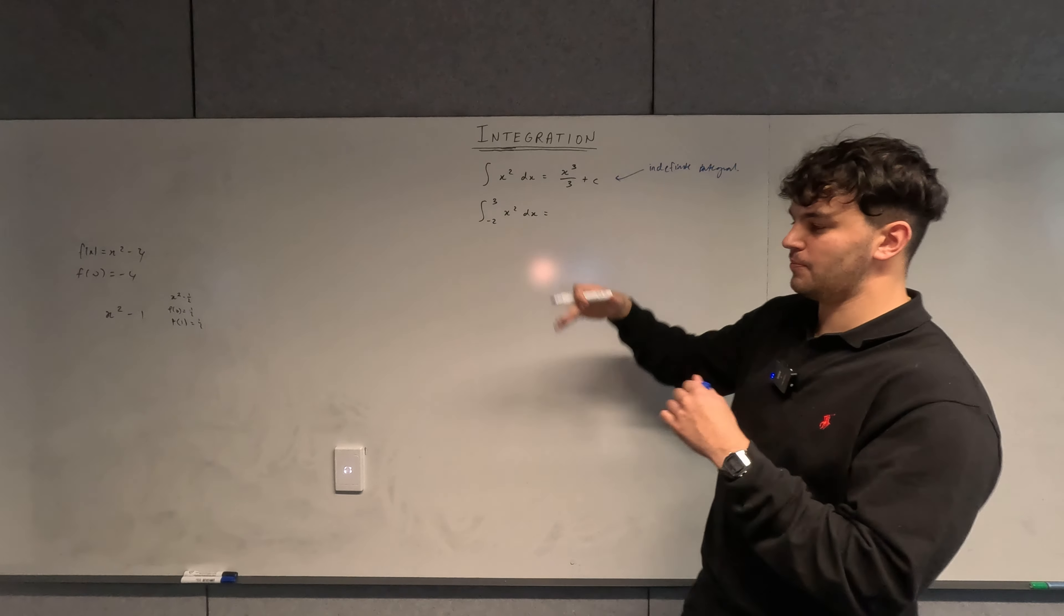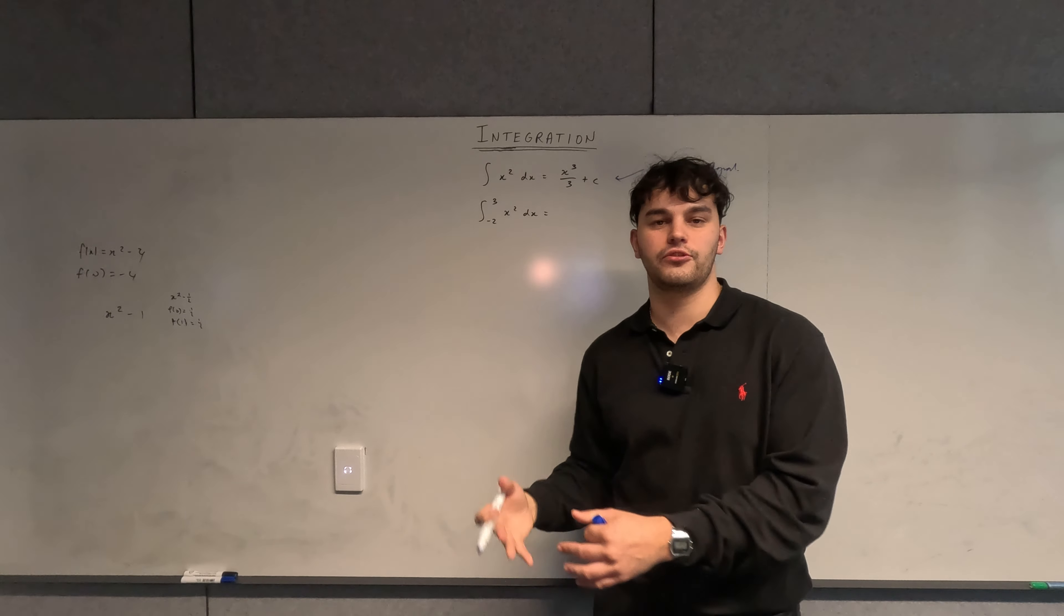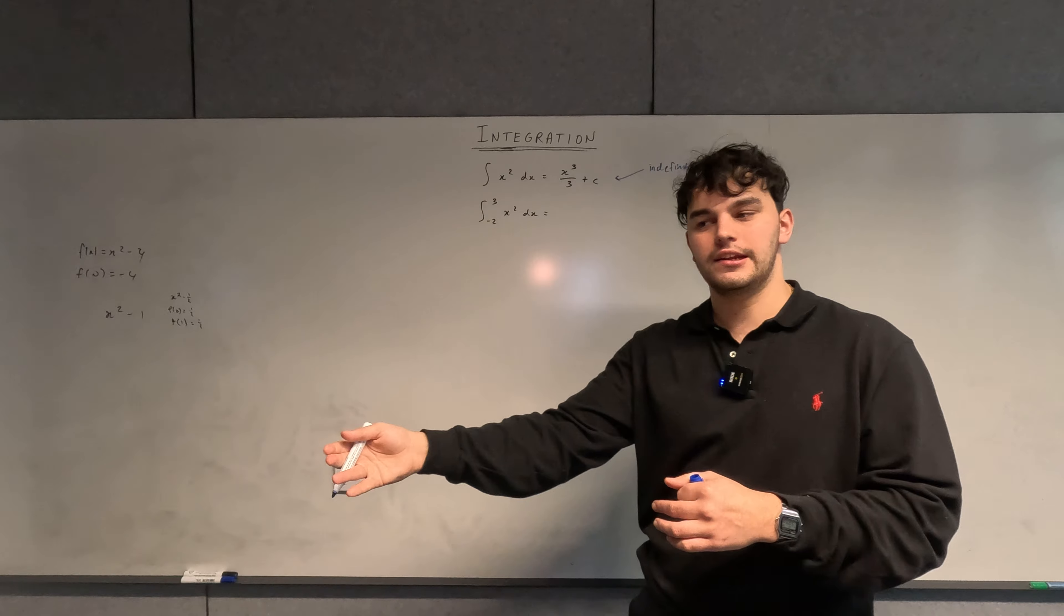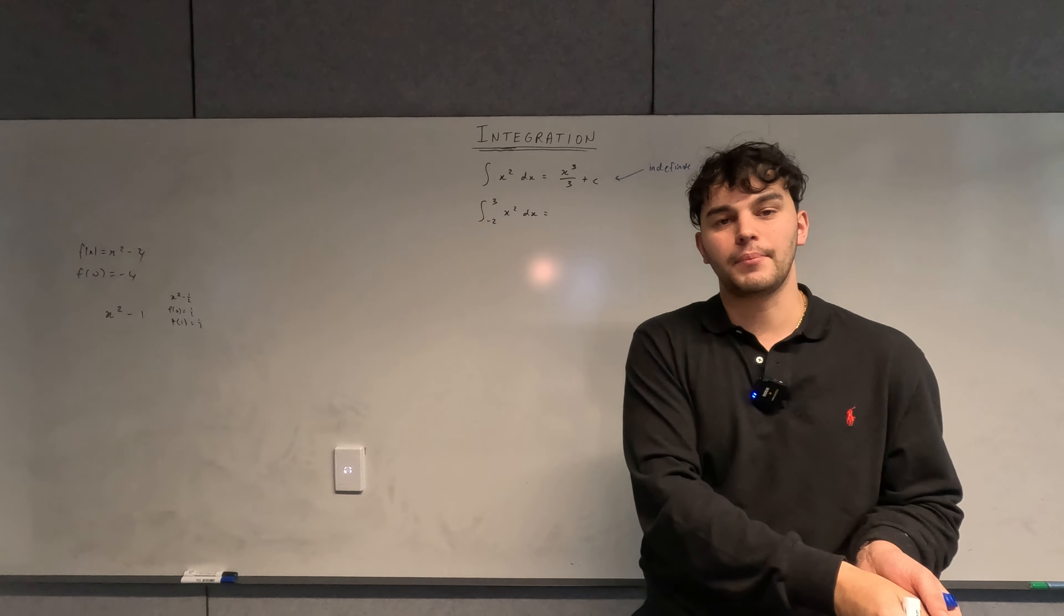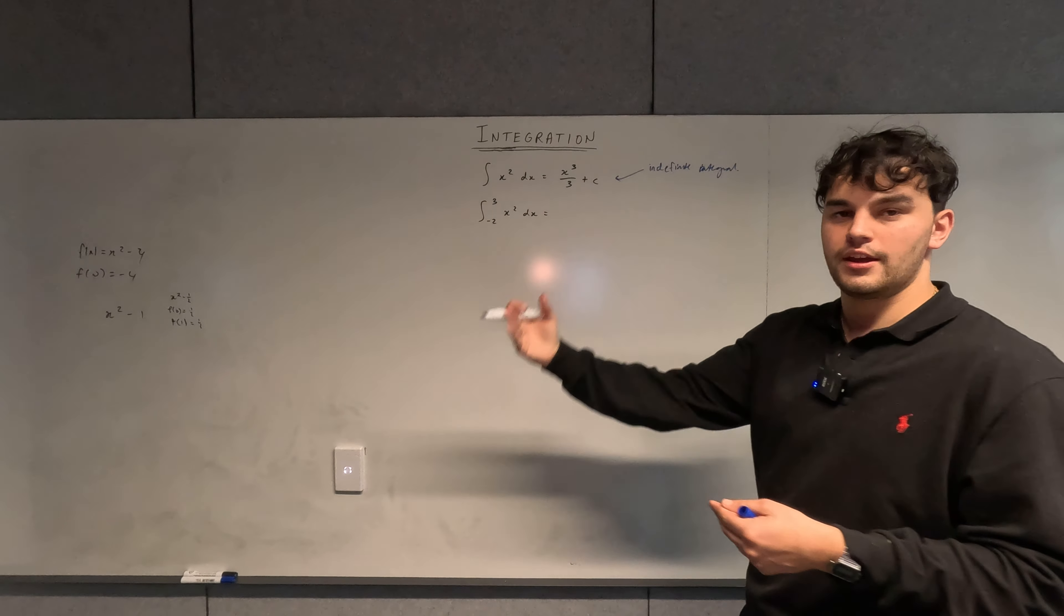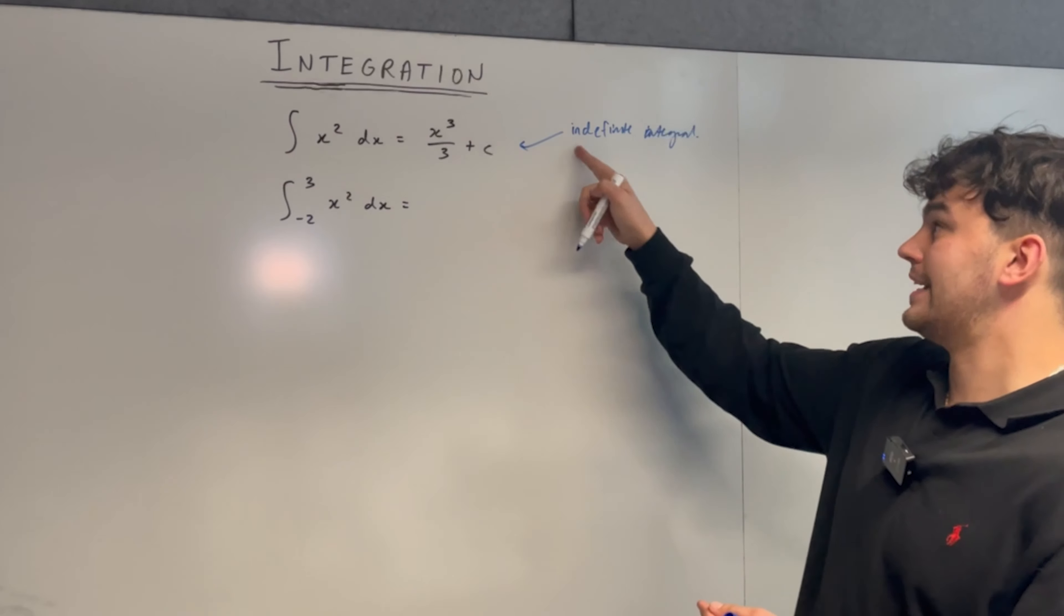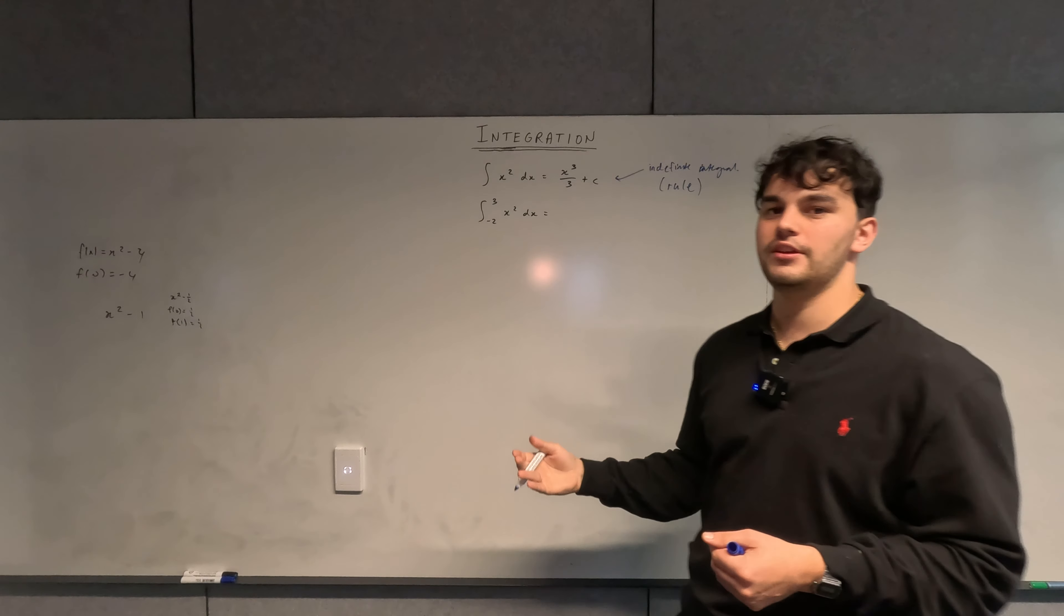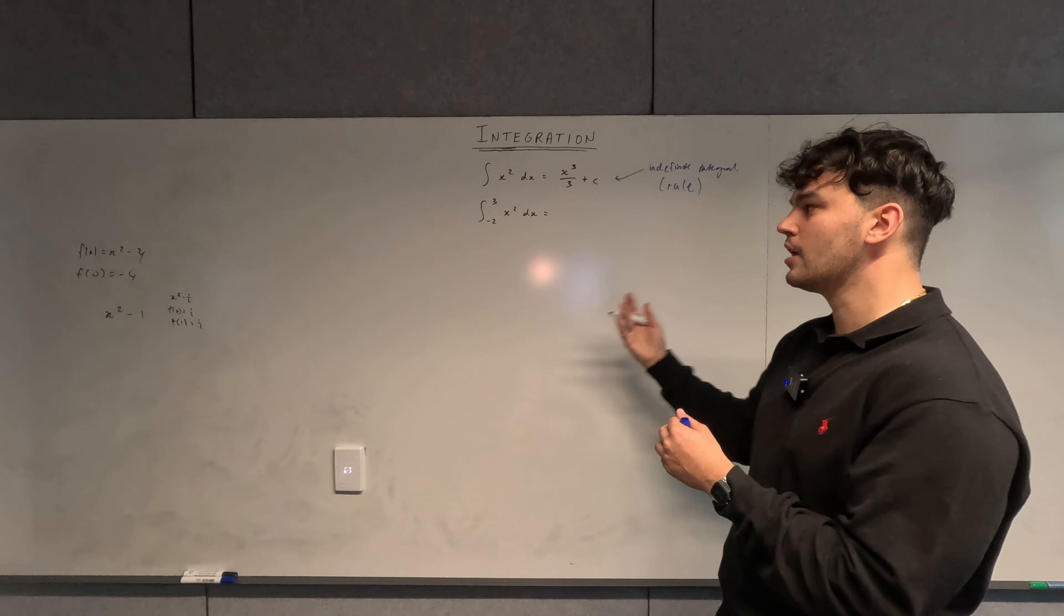And the reason why it's called indefinite is because it's not happening over a certain x value. It's the same as if you have a function and you differentiated it—you can get a rule, but then you could also substitute in a number to get a rate of change. There's just more specific terms in integration compared to differentiation. So the indefinite integral is literally just a rule.